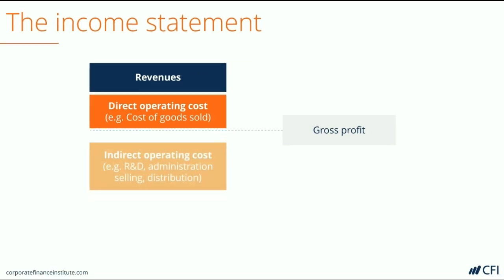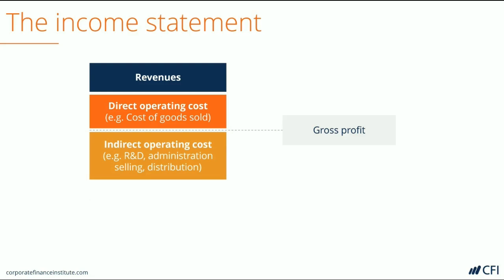Next on the income statement come the indirect operating costs. These include things like research and development, administration, selling, and distribution. Several of these line items may be grouped into one, sometimes called selling general and administrative expenses, SG&A, or just general and administrative costs, G&A.